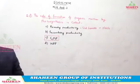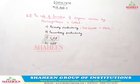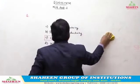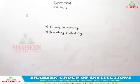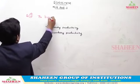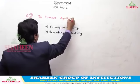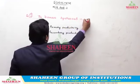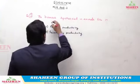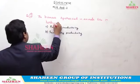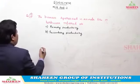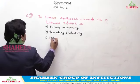Let us move to question number 2. The biomass synthesized in animals — like in herbivores — referred as: options are primary productivity, secondary productivity, GPP, or NPP.